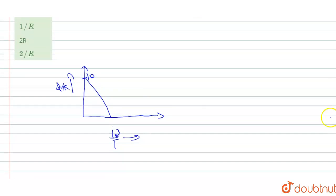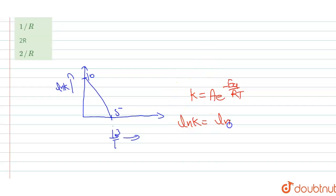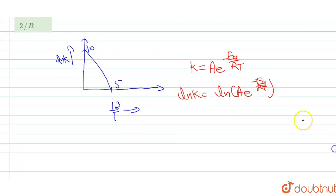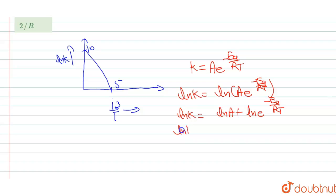We know the relation between k and T: k equals A·e^(−Ea/RT). Now we take ln on both sides. ln K equals ln(A · e^(−Ea/RT)). Applying the property of ln — ln(a·b) equals ln a plus ln b — we get: ln K equals ln A plus ln(e^(−Ea/RT)), which gives ln K equals ln A minus Ea/(RT).